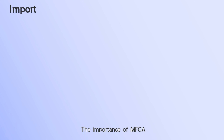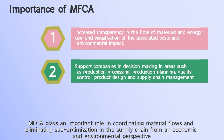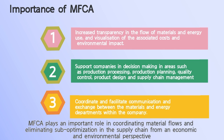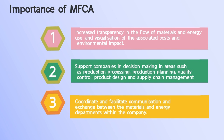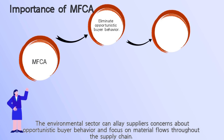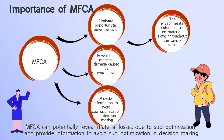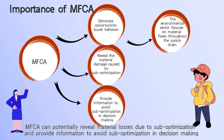The importance of MFCA: MFCA plays an important role in coordinating material flows and eliminating sub-optimization in the supply chain from an economic and environmental perspective. The environmental sector can allay suppliers' concerns about opportunistic buyer behavior and focus on material flows throughout the supply chain. MFCA can potentially reveal material losses due to sub-optimization and provide information to avoid sub-optimization in decision-making.